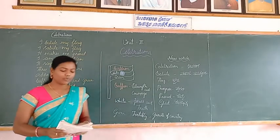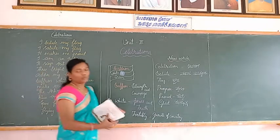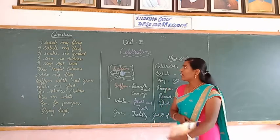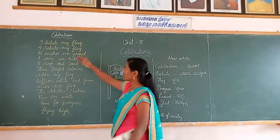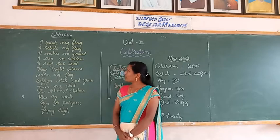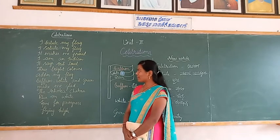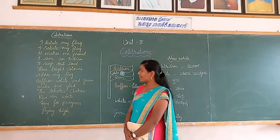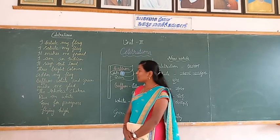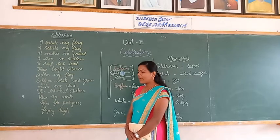Dear students, first I will read this poem and you repeat after me. 'I salute my flag. It makes me proud. I am an Indian, it says out loud. Three bright colors adorn my flag — saffron, white and green — make me glad. The Ashokan Chakra on white, spins for progress, flying high.'